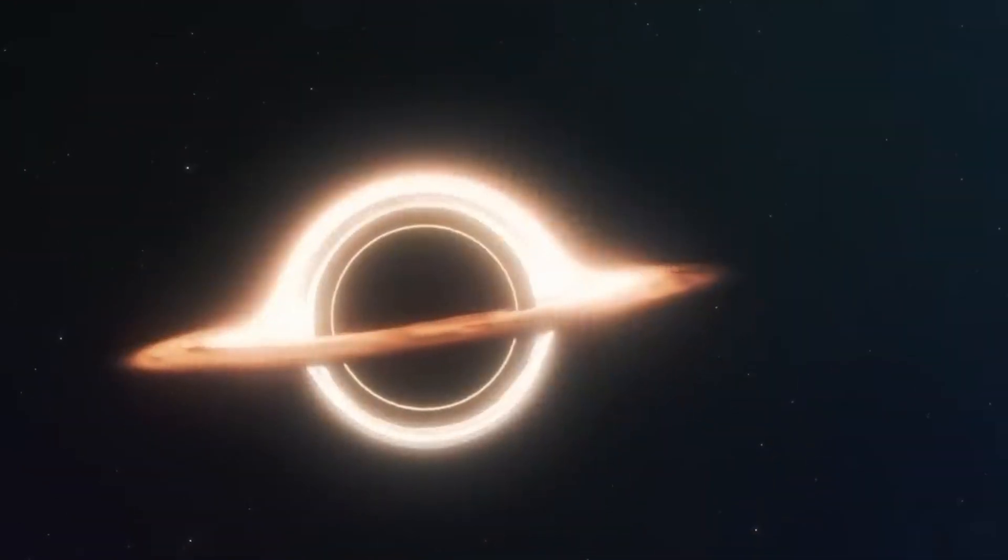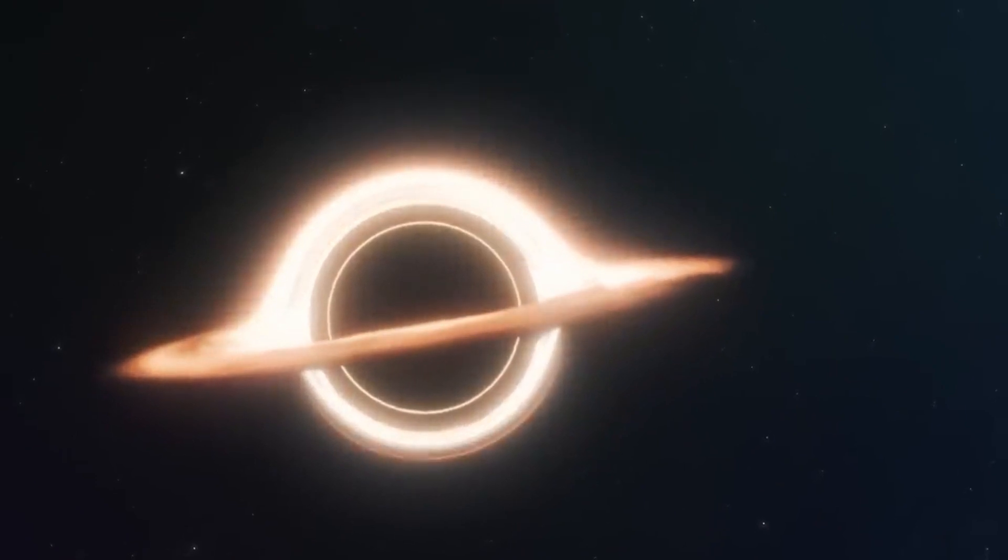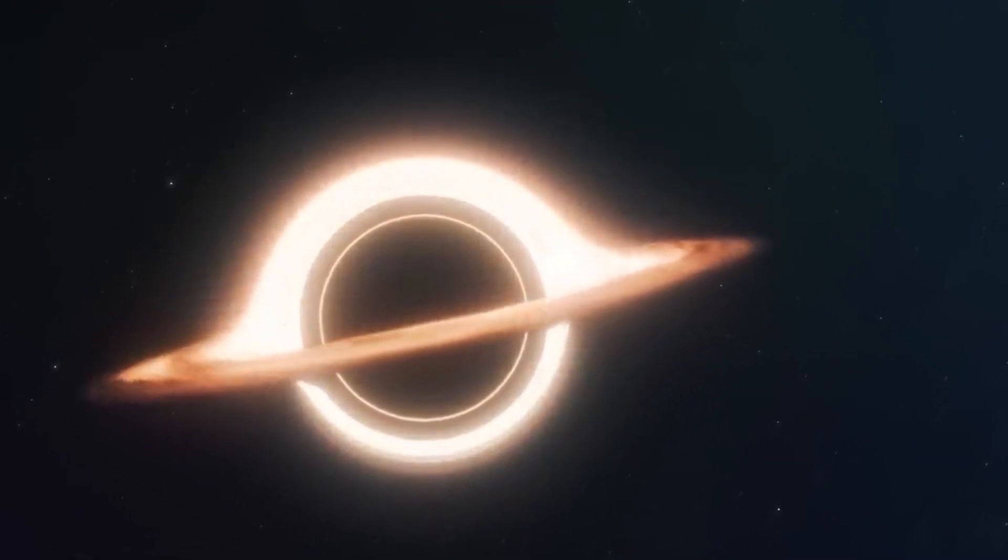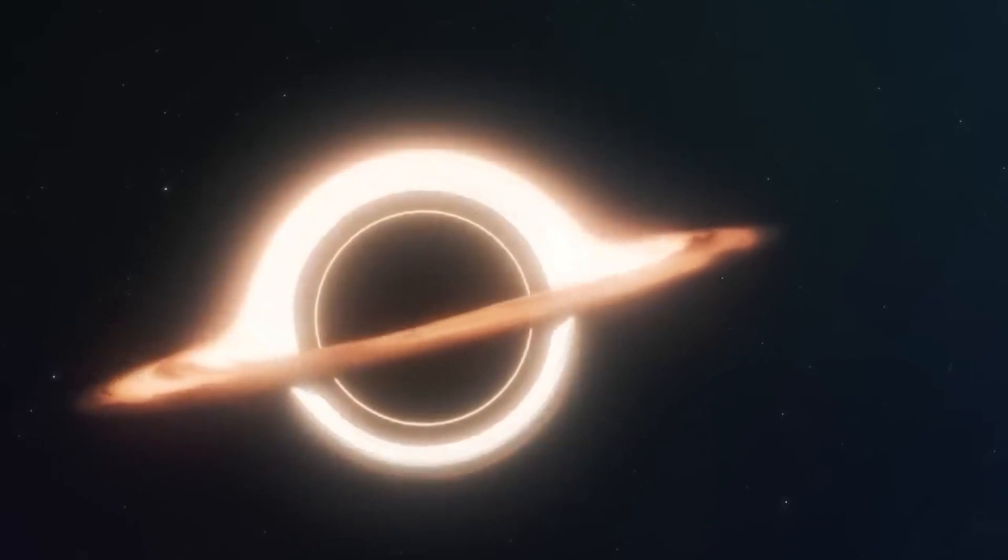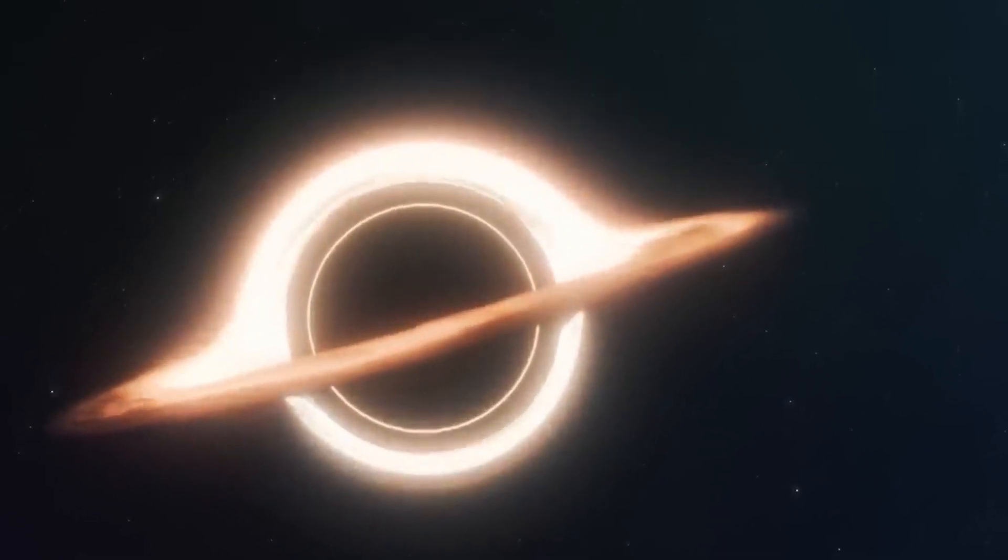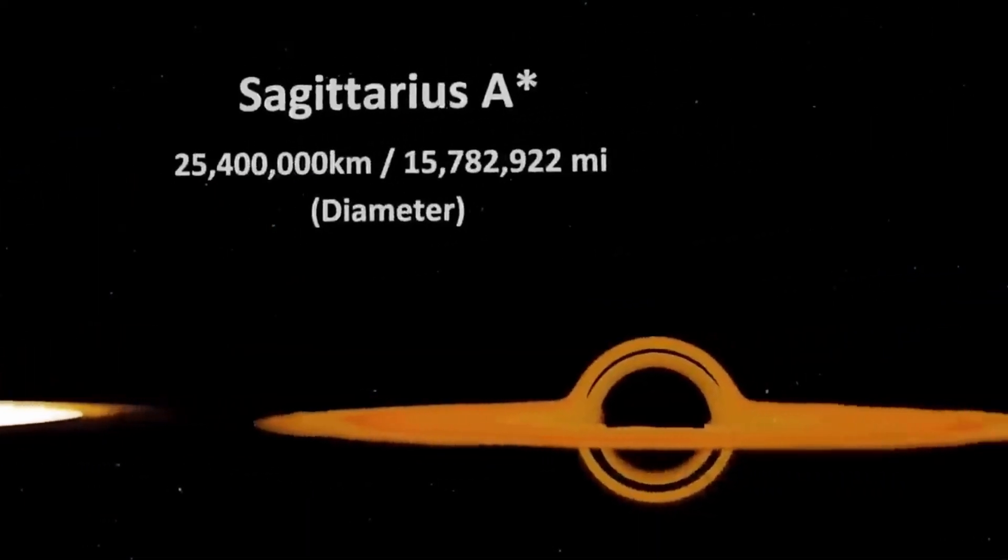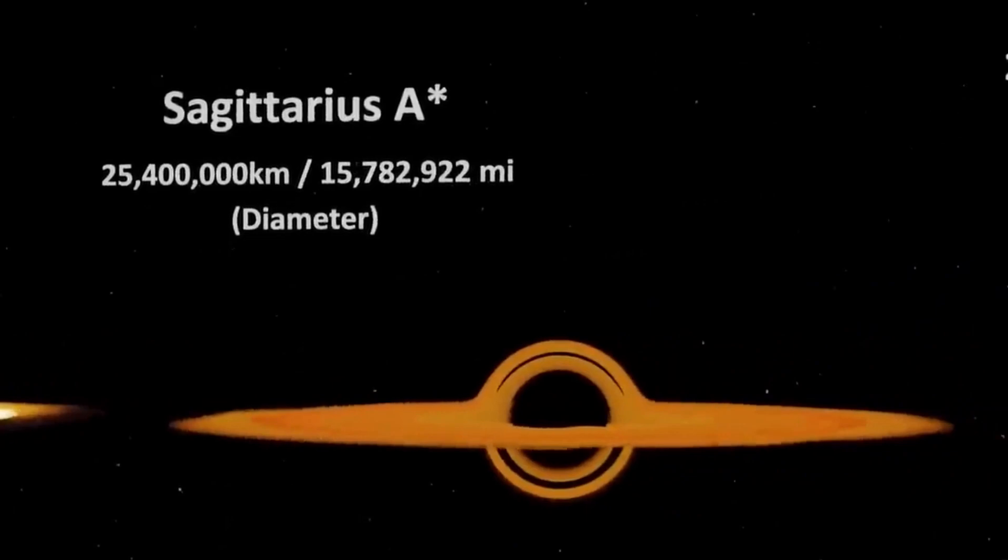Intermediate-sized black holes have masses ranging from hundreds to hundreds of thousands of solar masses. They are significantly larger than stellar black holes, with diameters ranging from several hundred kilometers to several hundred thousand kilometers, but still considerably smaller than supermassive black holes.